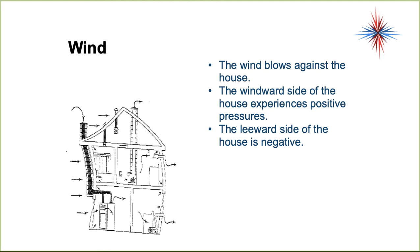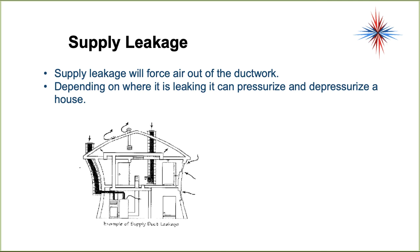Wind blows against the house: the windward side experiences positive pressures and the leeward side experiences negative pressure. Supply duct leakage is something many people don't think about. If a supply duct — the air going to the rooms from the furnace or air handler — is leaking in an unconditioned space like an attic, it forces air out of the ductwork. This can pressurize or depressurize a house depending on where it's leaking. A supply duct leaking in an attic will pull all the air out of the house and cause a negative pressure situation.